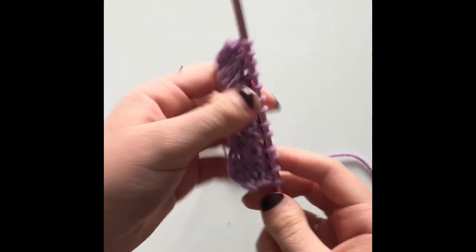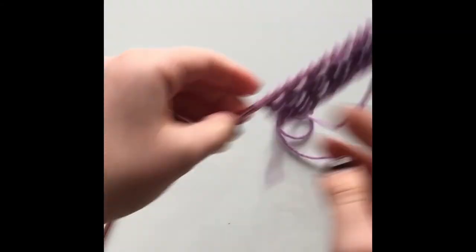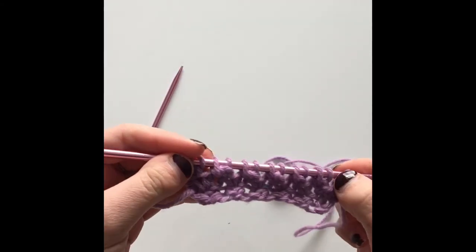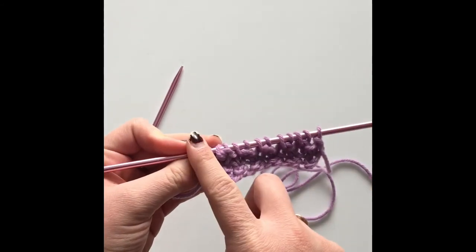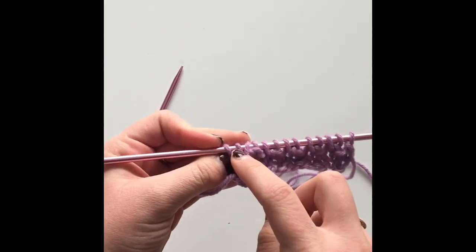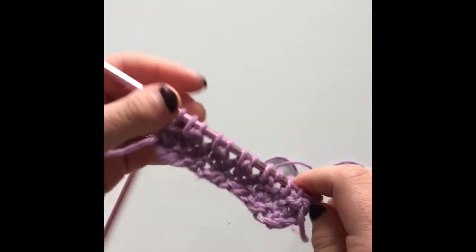So that is it for this pattern. It's just a repetition of those four rows. Knit a whole row, then you knit one and do the stitch. Then knit the third row, then do the stitch and knit the last one. So that is what we do for the entire pattern.